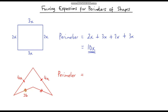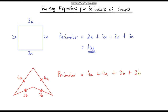Likewise, the two dashes on the other pair of sides tell us those two side lengths are also the same, so they are each 3b. Now we have all our side lengths. Let's form an expression for the perimeter by adding everything together: 4a plus 4a plus 3b plus 3b.